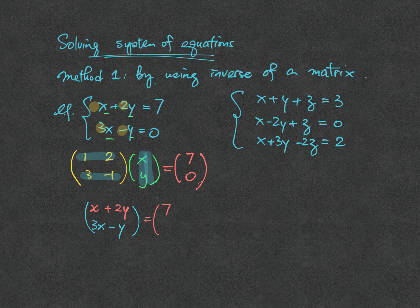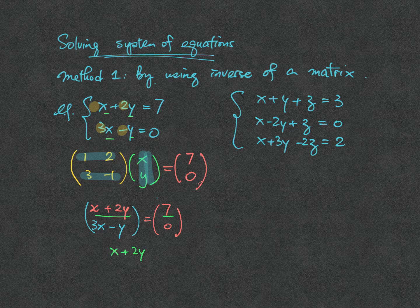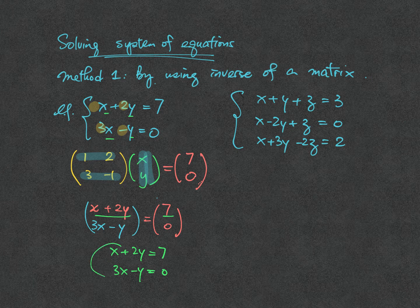On the right hand side, you still have 7, 0. By comparing the terms, that means now you can rewrite it as x plus 2y equal to 7, 3x minus y equal to 0, which is the original set of equations.